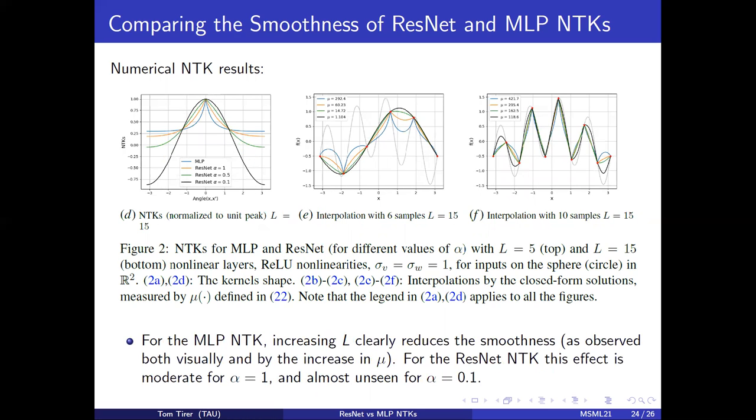When we increase the number of layers, we get the following NTK results. For the MLP, increasing L, the number of hidden layers, clearly reduces the smoothness.